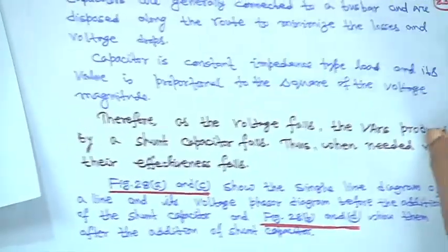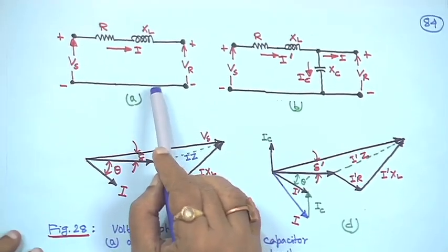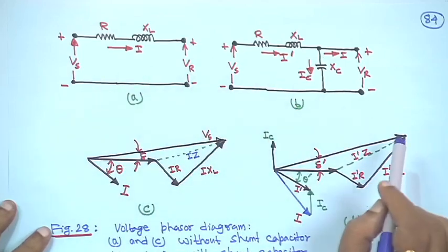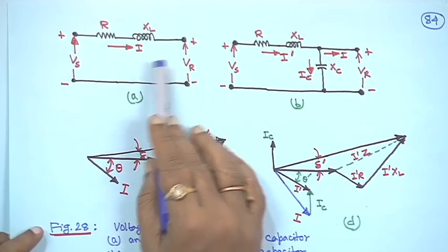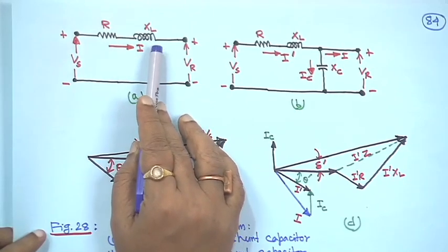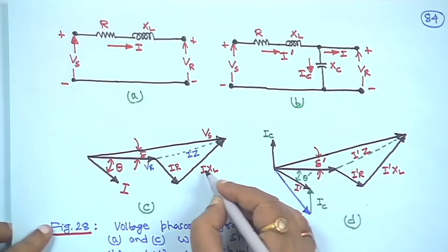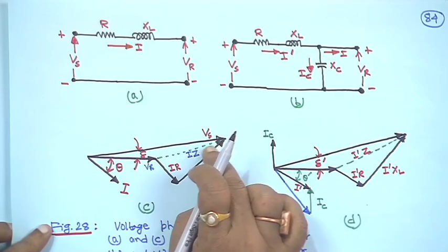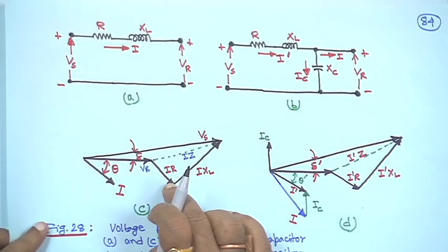Now take a simple circuit with and without a shunt capacitor. This is a simple series circuit with resistance R and inductive reactance X. V_S is the sending end and V_R is the receiving end voltage — all are per-phase, line-to-neutral voltages. Drawing the phasor diagram: V_R is the reference, the I·R drop and I·X_L drop are shown, I·Z is the green line, and V_S is the sending end voltage without the capacitor.